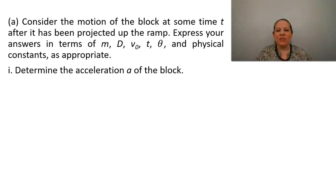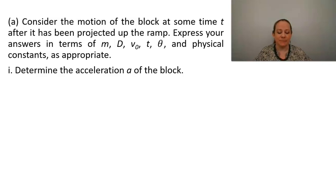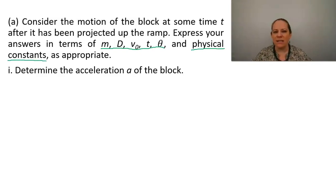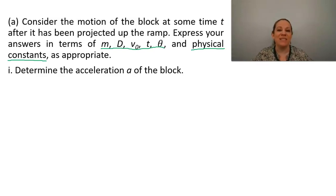Part A: consider the motion of the block at some time T after it has been projected up the ramp. Express your answers in terms of M, D, V0, T, theta, and physical constants as appropriate. Part one: determine the acceleration A of the block. This segment — expressing our answers in terms of given quantities and physical constants and doing the work all symbolically — is common across all four AP physics exams, but even more prevalent on the C exams.